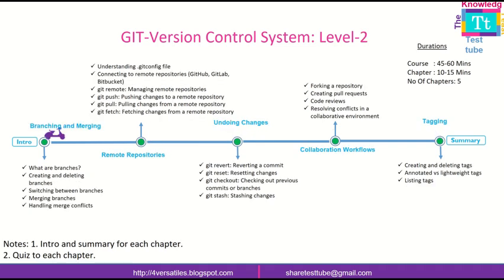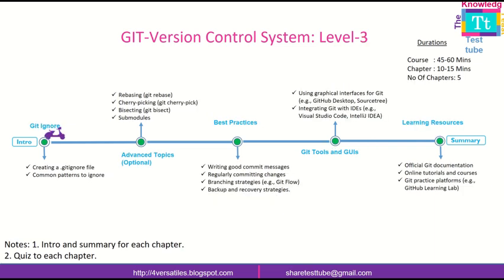Coming to Level Two, we are going to talk about branching and merging, and then remote repositories — which touches on GitHub but not in complete detail, since GitHub will have its own separate course. Then we cover undoing changes using Git commands, collaboration workflows, and tagging. That covers Level Two.